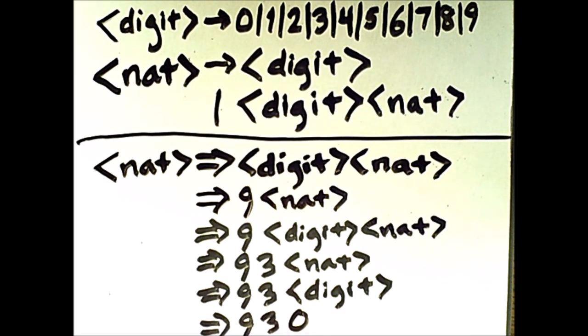So it was possible to represent the number 930 using our grammar, and this is a derivation of this particular grammatical sentence.